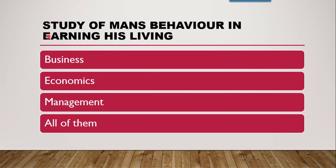The next question is: study of man's behaviour in earning his living is called — whether it is business, whether it is economics, whether it is management, or all of them. The correct answer is economics, because business deals with economic activities and does not include the study of man's behaviour. Management includes functions such as staffing, planning, coordinating, and organisation. Economics includes engaging persons into various occupations which make them earn something for their living.